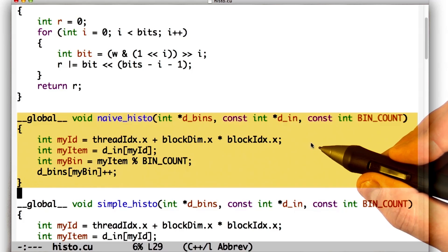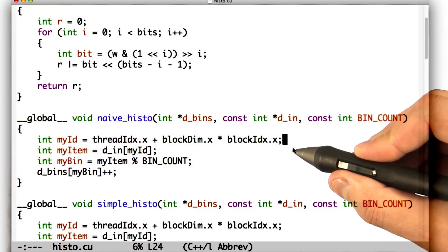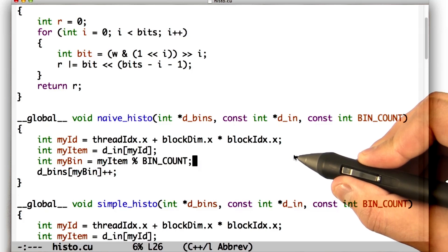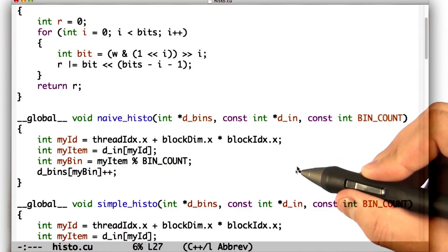Let's look at this very simple kernel. In this code, the first thing we do is compute our global ID. Then we fetch our item from global memory. Then we calculate which bin our item is associated with. In this case, we're just using a very simple mod operator to do it. And finally, we increment the bin with which our item is associated.